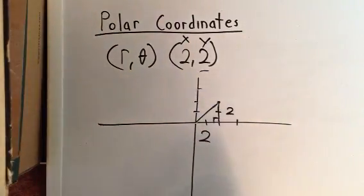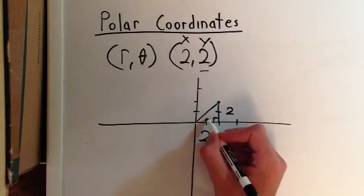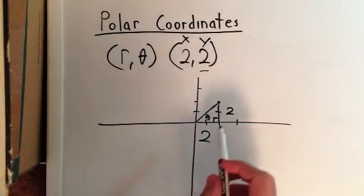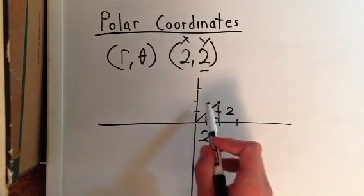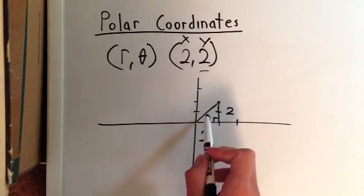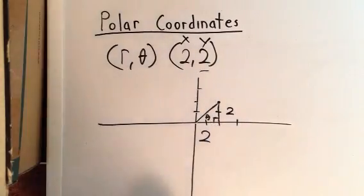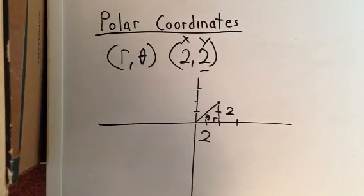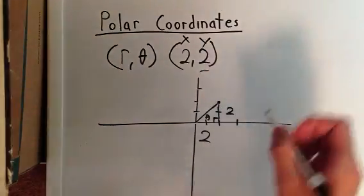And our angle in the polar coordinate system will be this θ right here. As I said, the angle between the polar axis and the line segment. So we can easily see that if we take the inverse tangent, we can find out the angle. So let's go ahead and do that.